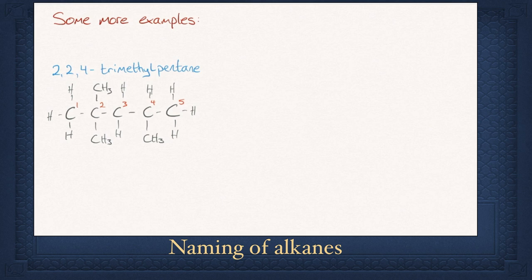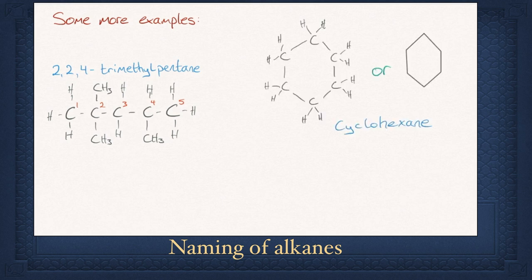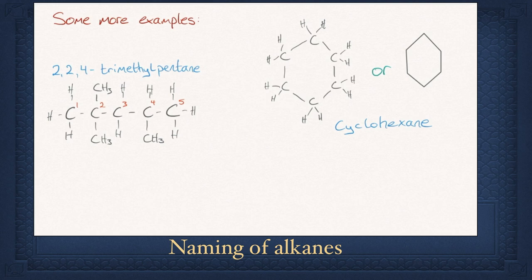So far we have seen straight chain alkane compounds, but you can also get them in a ring shape structure. For instance, cyclohexane — 'cyclo' because it is ring shaped, and 'hexane' because there are six carbon atoms. Each carbon atom has four bonds. Because this way is tiresome to draw, chemists use a more common way of drawing cyclo-shaped molecules where each point represents a carbon atom and we do not have to draw in the hydrogen atoms.